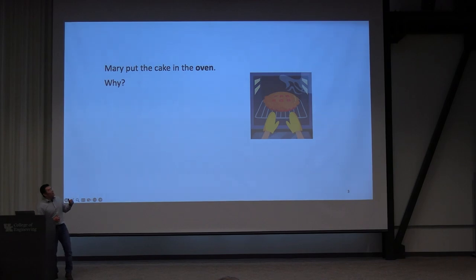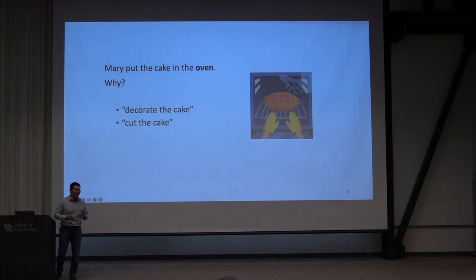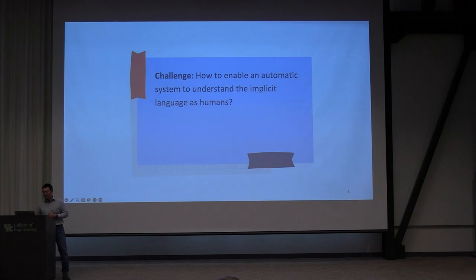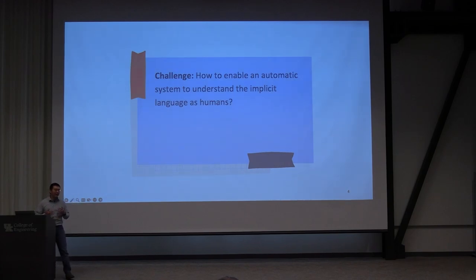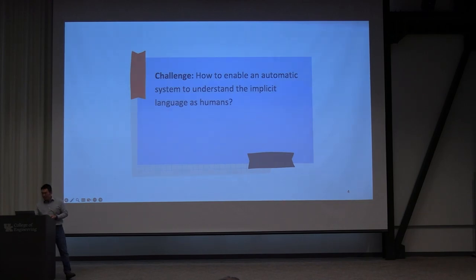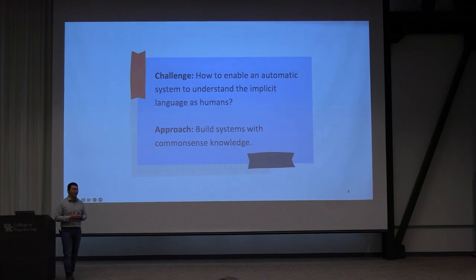Here's another example. Mary put the cake in the oven. Why? Is it because she wants to decorate the cake? No, she doesn't need to do that in the oven. Cut the cake? No, she'd need a knife instead of an oven. Eat the cake? Of course not. Bake the cake — that's the correct answer. You know that because we know the function of the oven. This research was motivated by the observation that we often omit a lot of information in our daily speaking or writing. However, humans have no difficulty understanding each other because we have common-sense knowledge. It's difficult for machines to read between the lines as we humans do because they don't have this common-sense knowledge. The research goal is to bridge this gap by building computational models that can enable inference about implicit language.